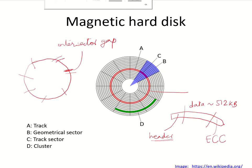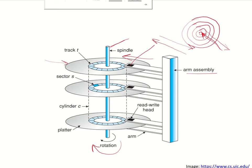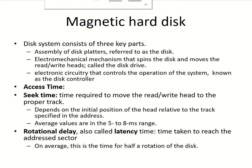A collection of contiguous sectors is known as a cluster. All the tracks at a particular radius on all the surfaces are referred to as a cylinder. These are the basic terminologies of a magnetic hard disk.